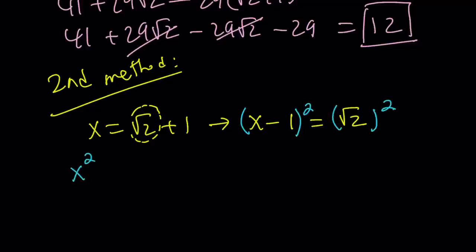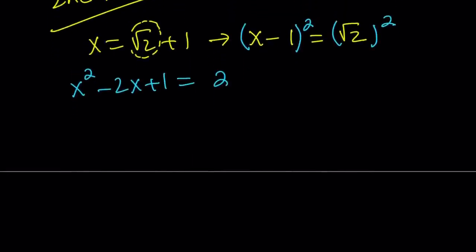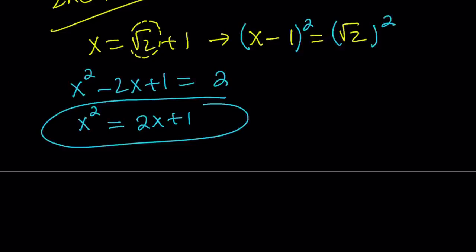If you square x minus 1, you get x squared minus 2x plus 1, and square root of 2 squared is equal to 2. So here, for our purposes, I'm going to isolate the highest power. I'm going to use a polynomial approach. So add 2x and subtract 1, you're going to get x squared equals 2x plus 1. This is not a perfect square. If you put everything on the same side, it is going to be a quadratic. So now, what am I going to do with this? Remember, our goal is to evaluate x to the 5th minus 29x.